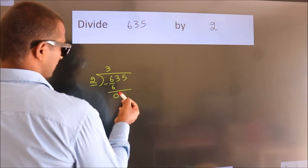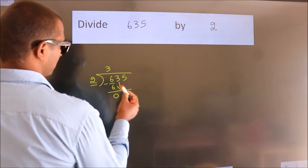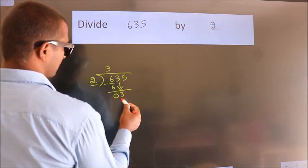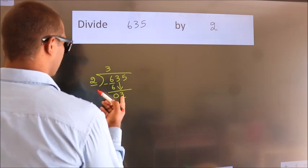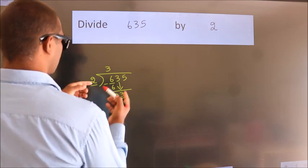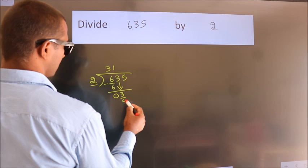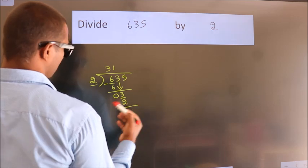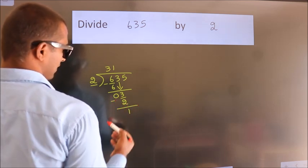After this, bring down the beside number. So, 3 down. So, 3. A number close to 3. In 2 table is 2 ones, 2. Now, we subtract. We get 1.